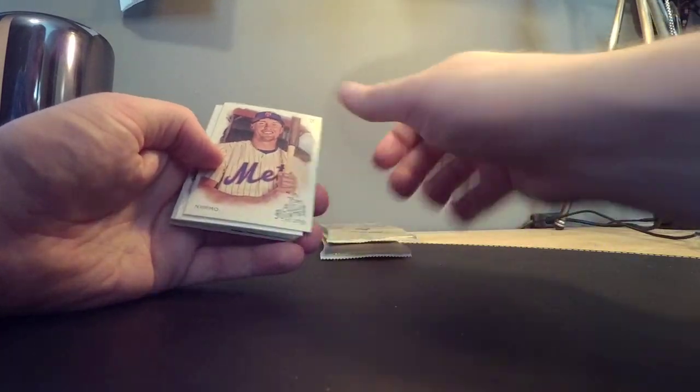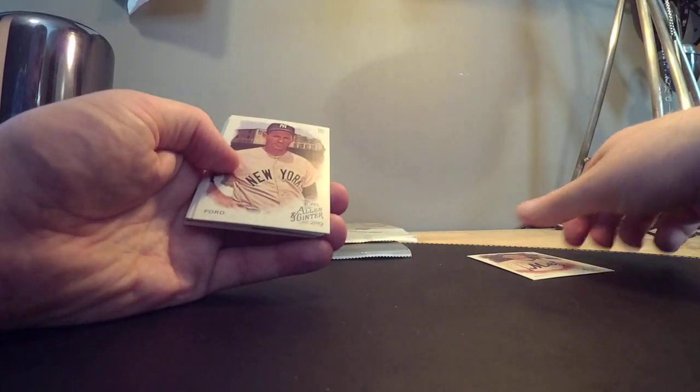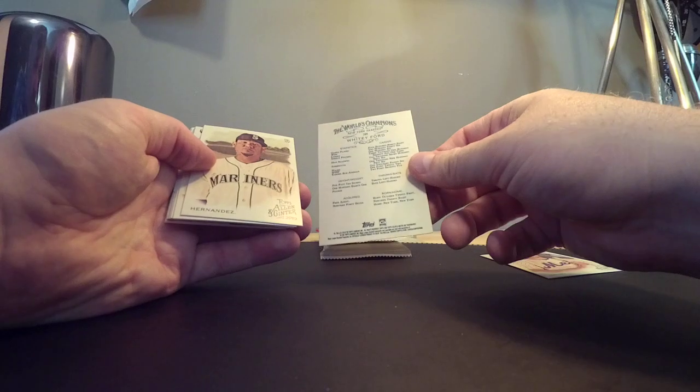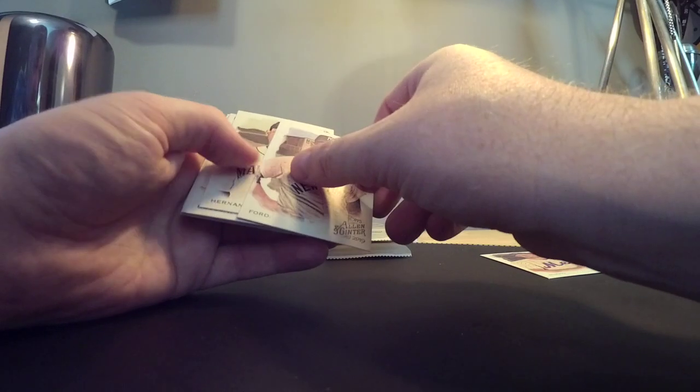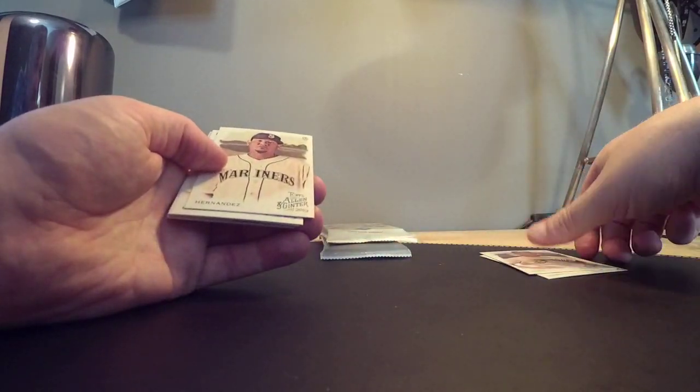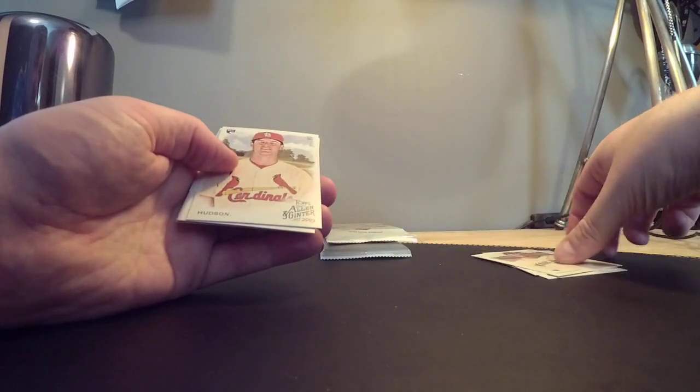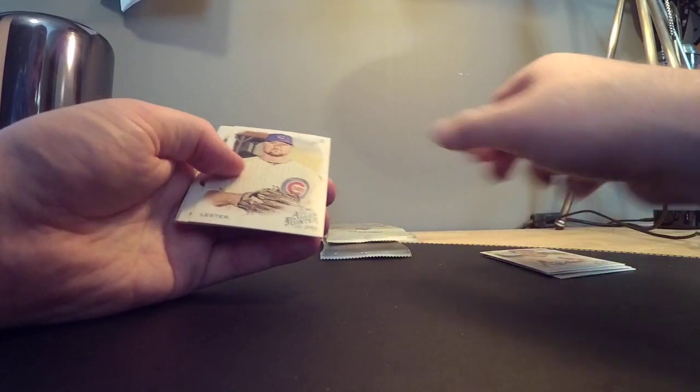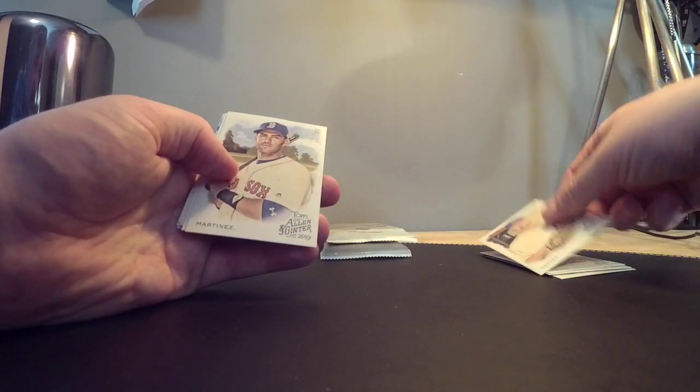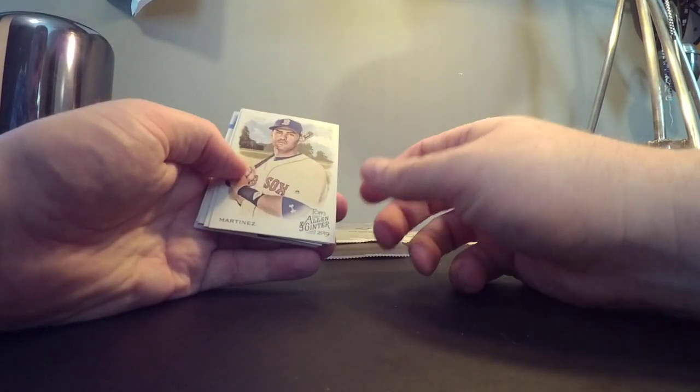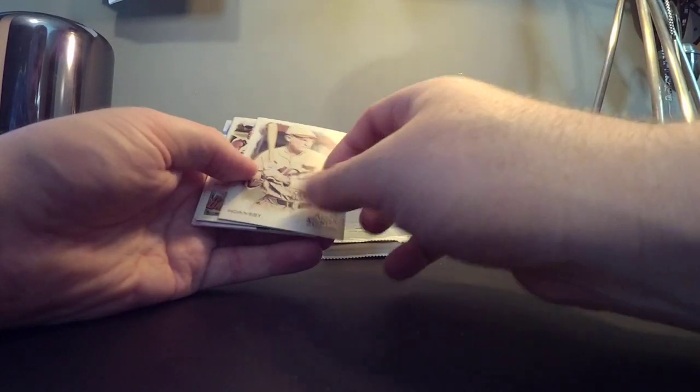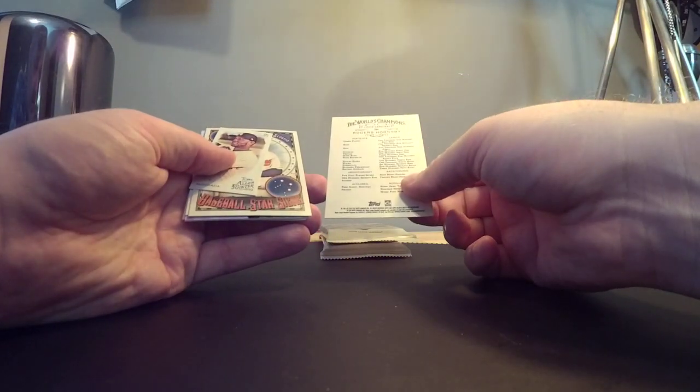Here we got Brendan Nimmo, kind of a matte finish on these, Whitey Ford, kind of cool to see some of the old players in here. Felix, Dakota Hudson, Jon Lester. Boo, not a Cubs fan, Brewers fan. J.D. Martinez, oh that's kind of interesting, Ozzie Hornsby.